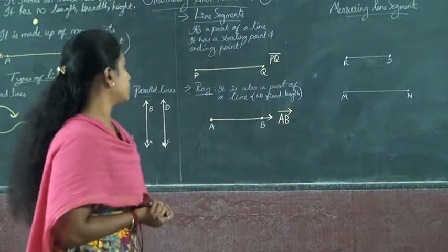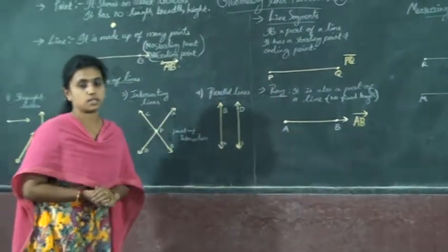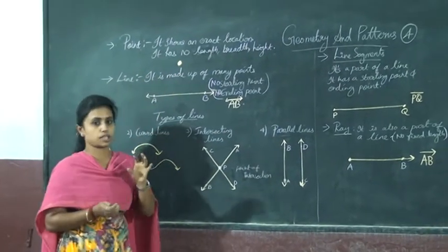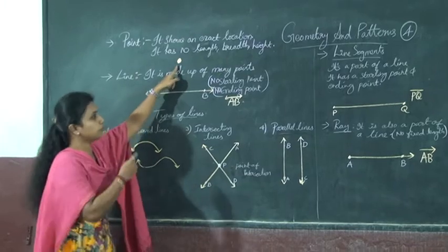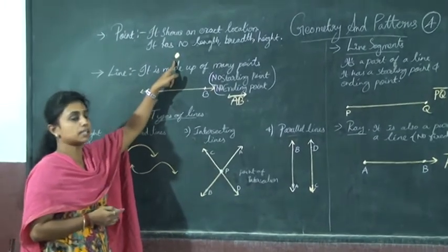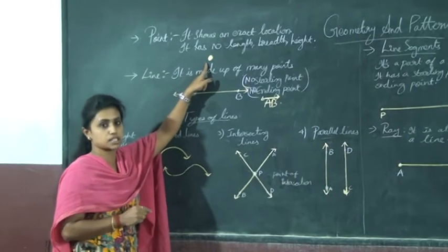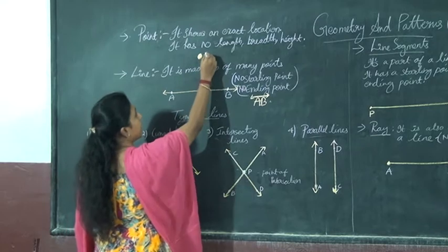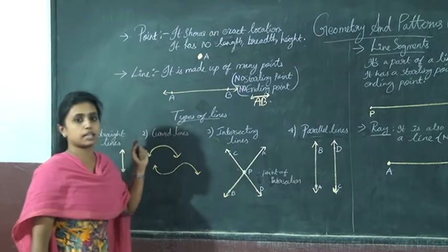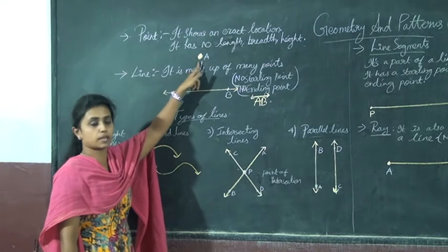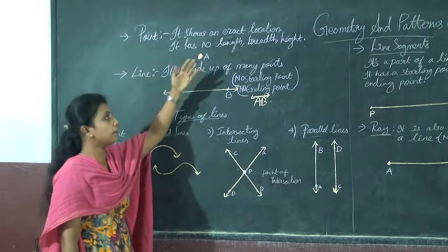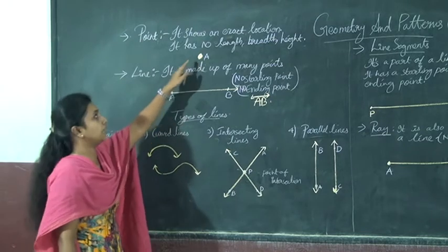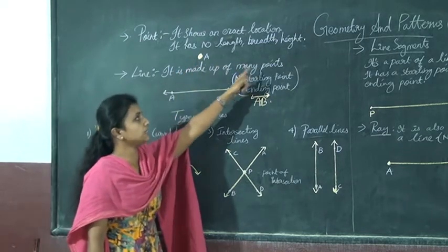Now let's start. Look here. First one is Point. What does it mean by a point? Point means it shows an exact location. It shows an exact location. We read it as Point A, Point B.